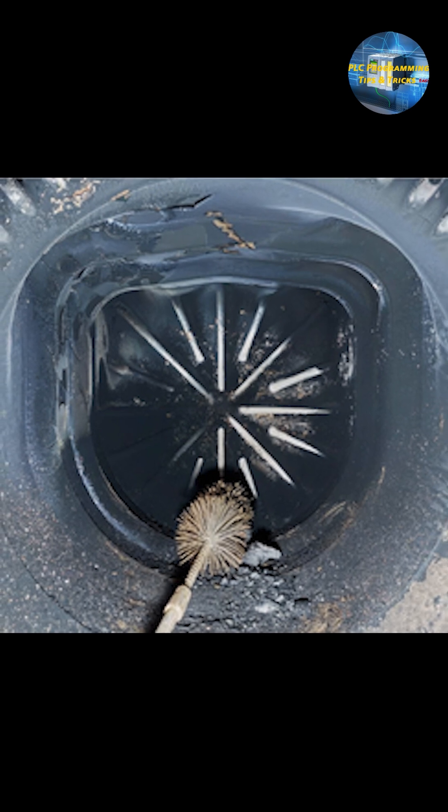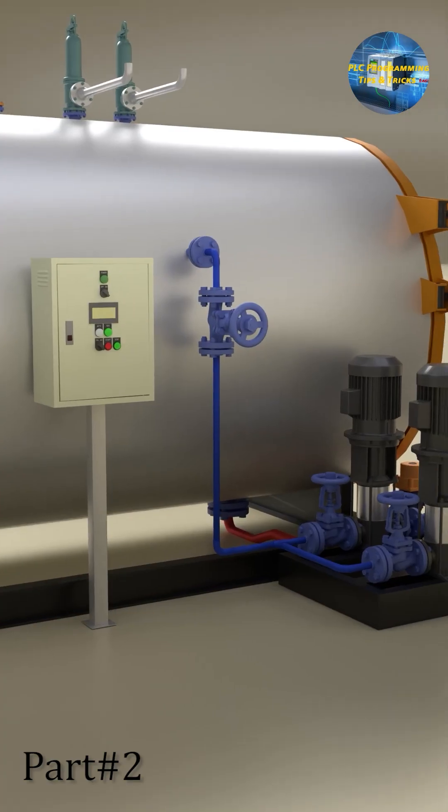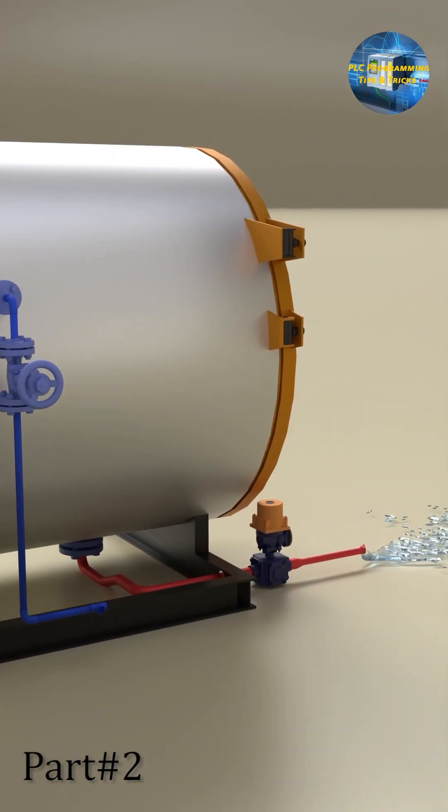These drain valves open maybe 4 to 5 times a day for quick 10 to 20 seconds just to drain some water from the boiler, and this helps to improve the boiler efficiency.